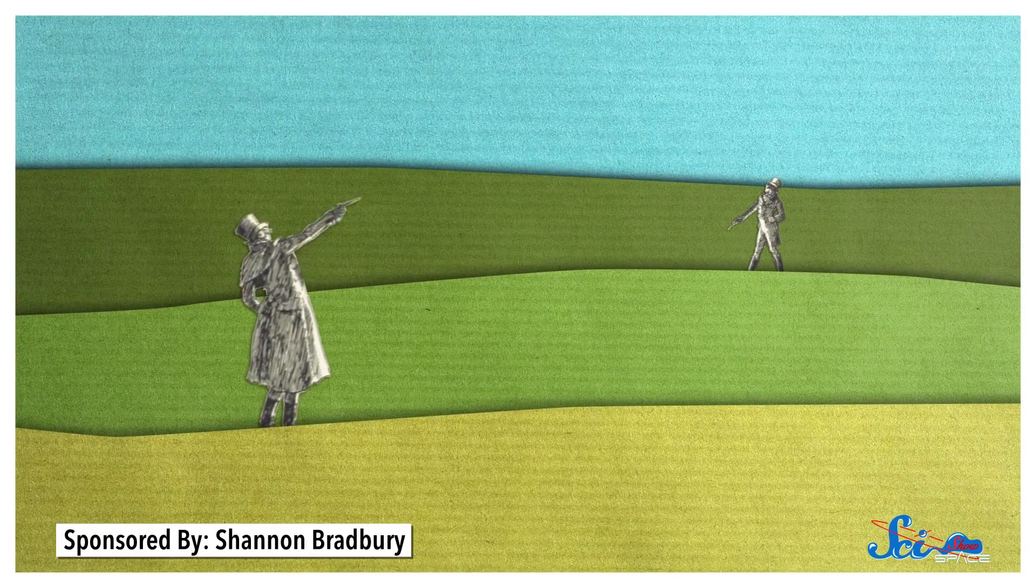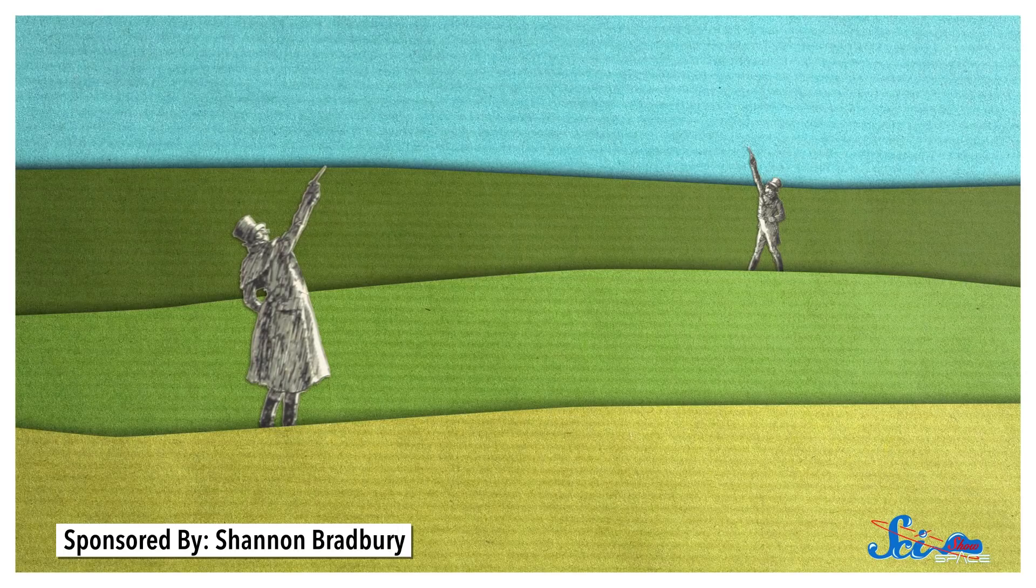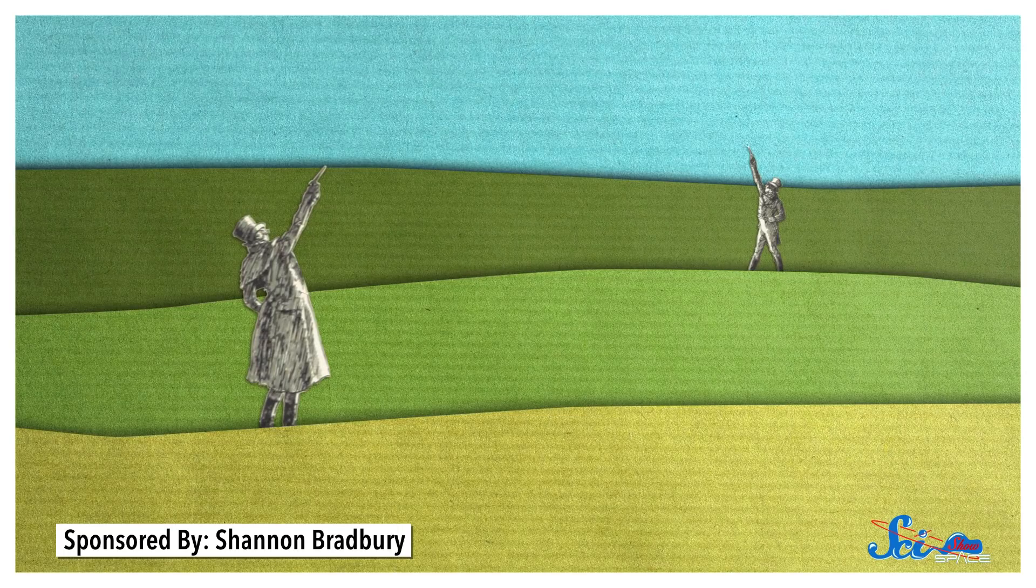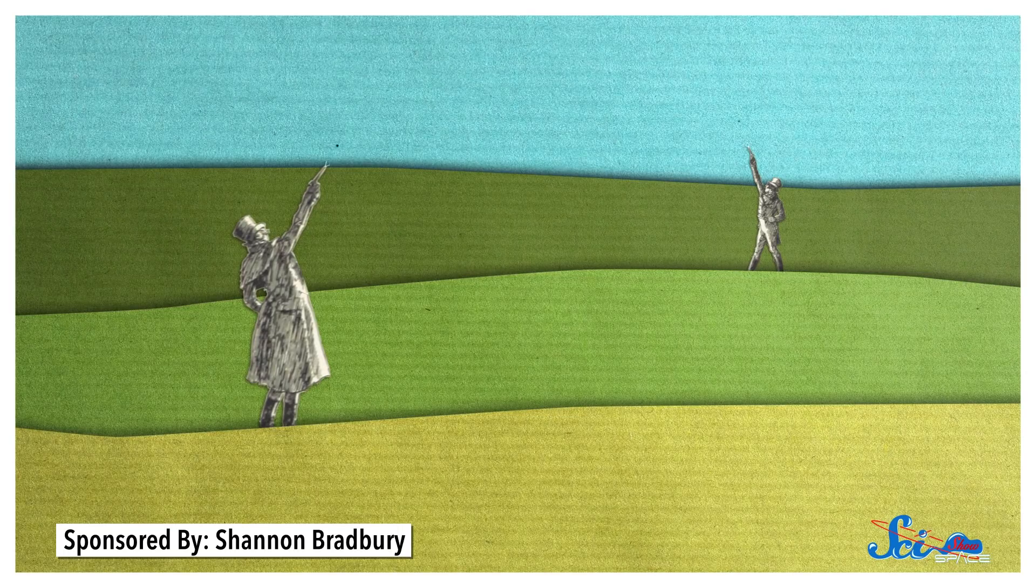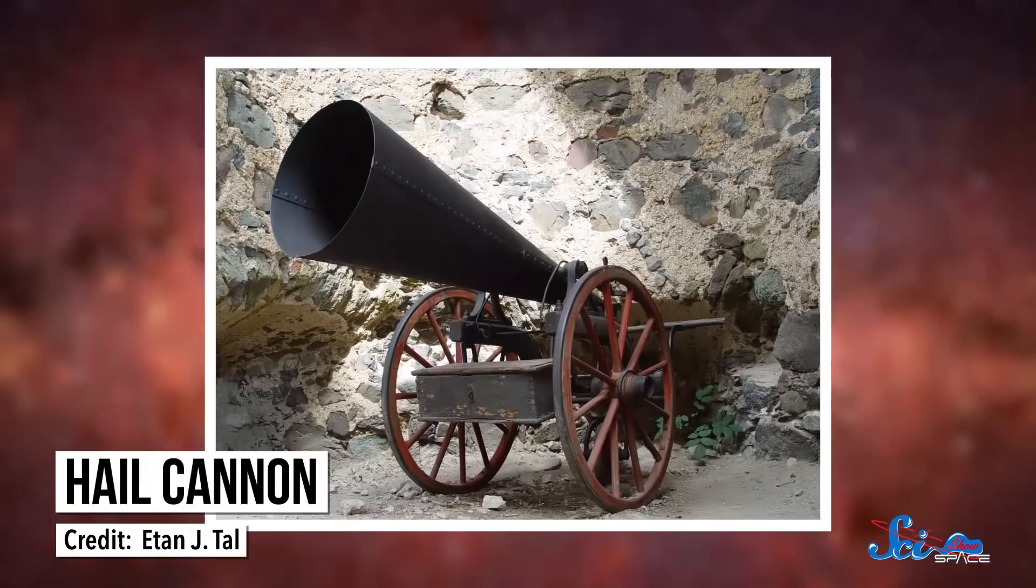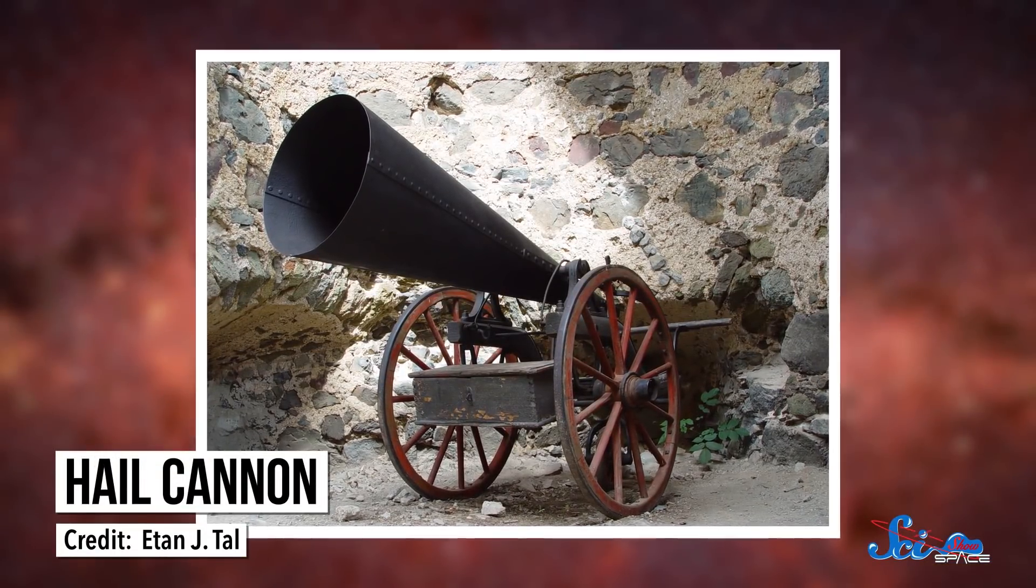In Europe, from the late Renaissance to the 1700s, people used something called weather shooting. Basically, you'd just fire a gun into the air, because maybe the sound would do something to the hail. Austria actually outlawed this because people kept accidentally shooting each other. But then in the late 1800s, the first hail cannons were produced.